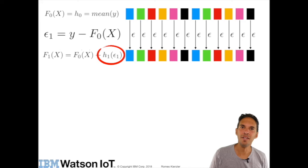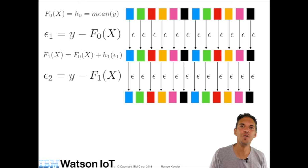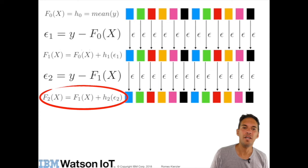And we will continue this step. So we compute the error of the newly obtained model epsilon 2 equals y minus f_1 of x. And again that we are using to train a weak learner h_2. And we just continue until we are converging.